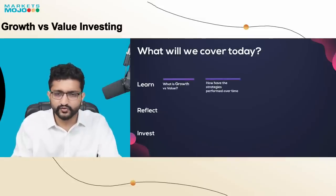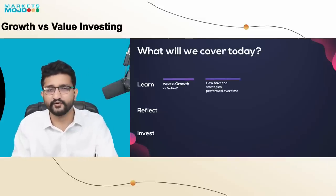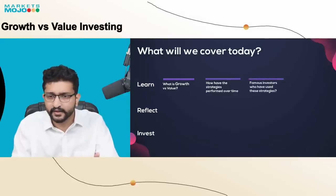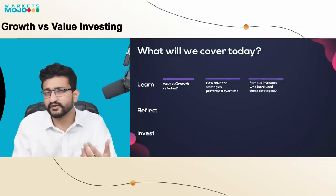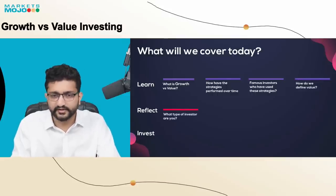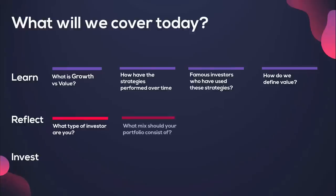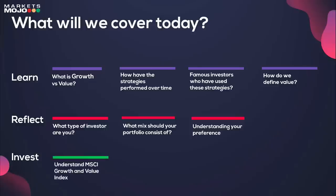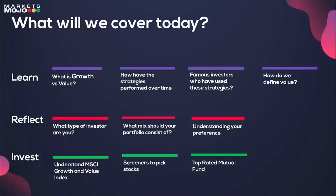In the first part: what is growth versus value, how have these strategies performed over time, is there any trend we can see, some of the famous investors who have used these strategies and what kind of stocks they've invested in, and how do we define value here at Markets Mojo. The second part: what type of investor are you, what mix should your portfolio consist of, and understanding your preference. Lastly, we look at the MSCI growth and value indices, screeners to pick stocks, and one of the top-rated mutual funds in these categories.